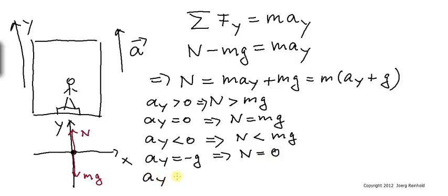Should the acceleration be even more negative than minus g, then it follows that the normal force will still be zero, but you will at some point hit your head on the ceiling.